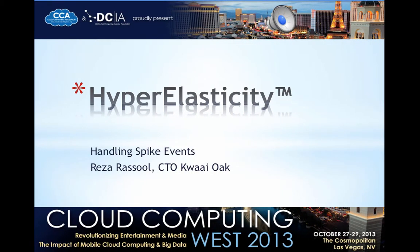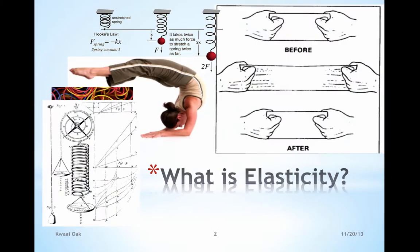Please welcome Razor Resort, Cloud Computing West. The ability of a cloud to handle a varying load is called elasticity.